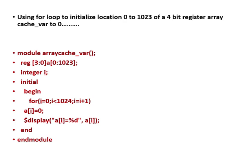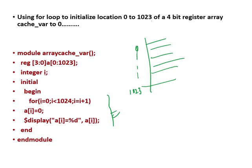Another example is initializing memory locations — say from 0 to 1024. It is a 4-bit register array with 1024 locations, and all locations have to be initialized with the value 0. In that case, a for loop is used: for i equal to 0, i less than 1024, i equal to i plus 1, a[i] equal to 0. So a[0] equal to 0, a[1] equal to 0, a[2] equal to 0, and so on — all 1024 locations initialized to 0 by a single for loop. This code is synthesizable.